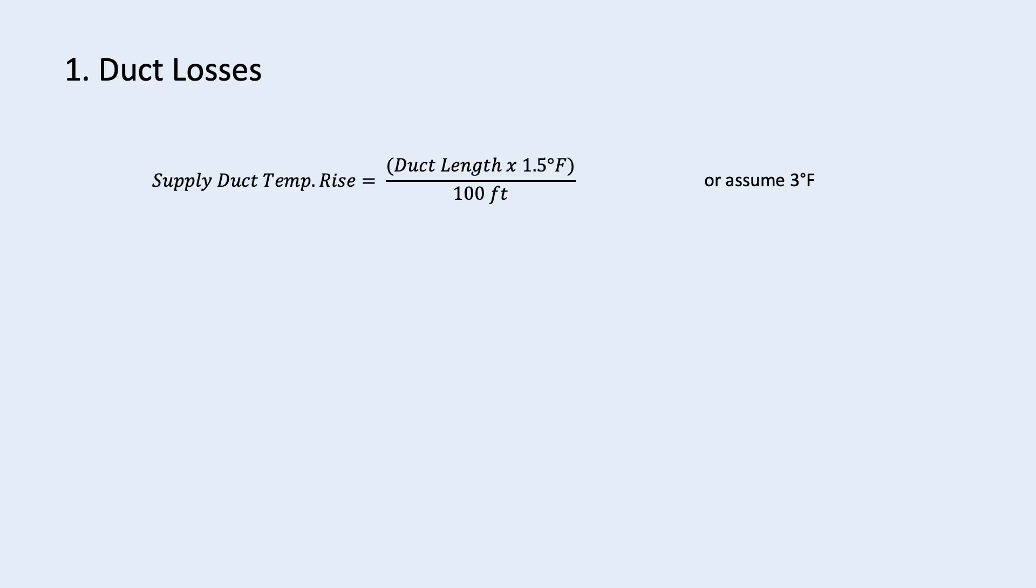Now, from the supply air temperature, we want to determine the off-coil temperature. So, there are two heat gains we need to account for.